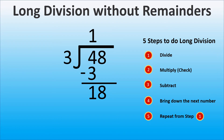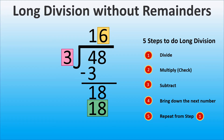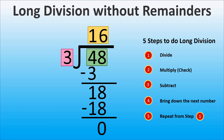Now we repeat from step 1. So we choose the closest number to 18 that can be divided by 3. It is 18. 18 divided by 3 equals 6. So we write 6 above the long division sign in the ones place, and we check. 6 times 3 is 18. Everything is correct, so we subtract. 18 minus 18 is 0. As there are no more numbers to bring down and the result of the subtraction is 0, it means that we don't have a remainder and we have finished the division. Thus, 48 divided by 3 is 16.